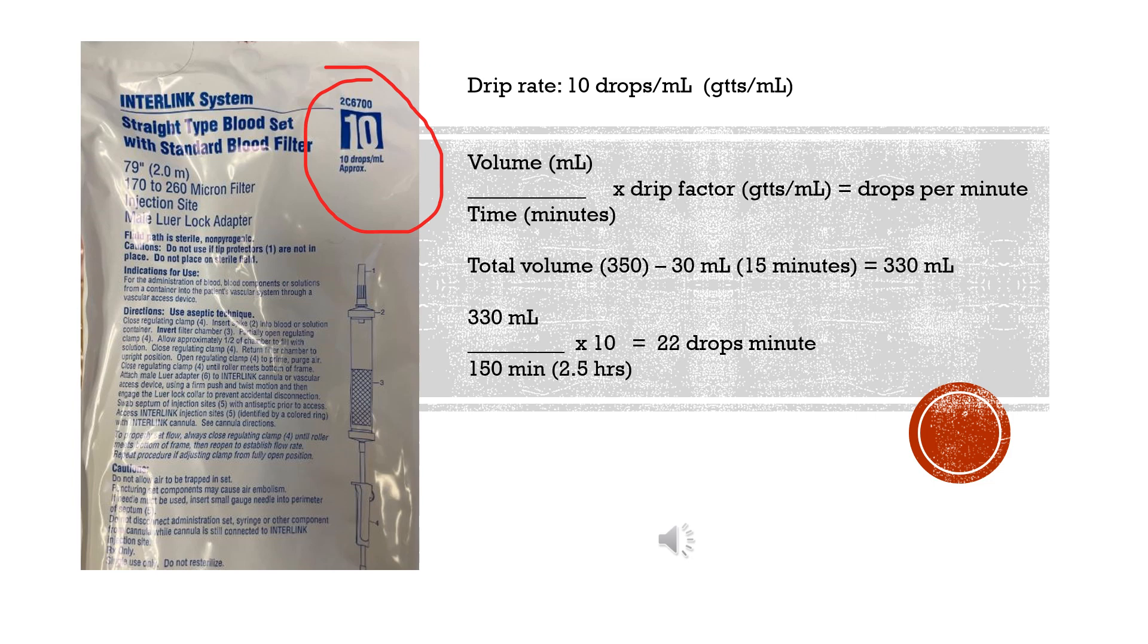That two and a half hours gives you a buffer in case you have had where patients occluding their own IV, and time has lapsed without any infusion going. This gives you a little wiggle room to work with, so that you can make sure that you're transfusing within the four hours from the time the blood has left the blood bank.